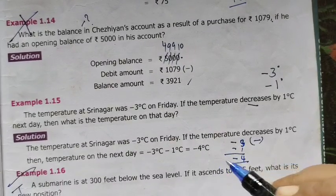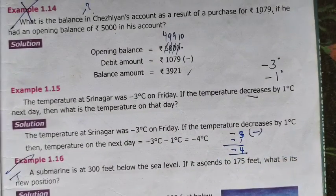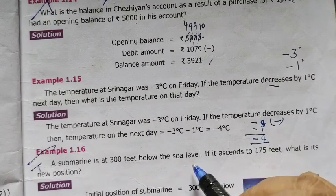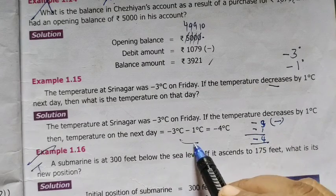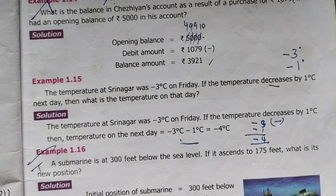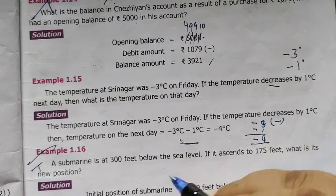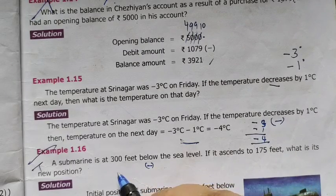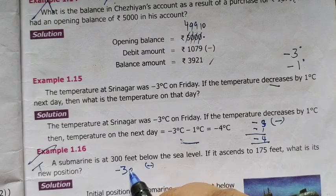A submarine is at 300 feet below the sea level. Here it is the sea level. The submarine is below the sea level. Below means minus. So the actual number is minus 300.